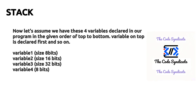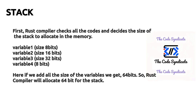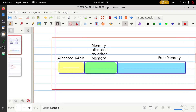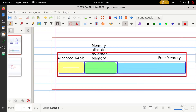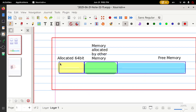Now let's assume we have four variables declared in our program in the given order from top to bottom — the variable on top is declared first and so on. You perform some operations using these variables and finally the program ends. The Rust compiler first checks all the code and decides the size of the stack to be allocated in memory. If we add all the sizes of the variables we get 64 bits, so the Rust compiler will allocate 64 bits for the stack.